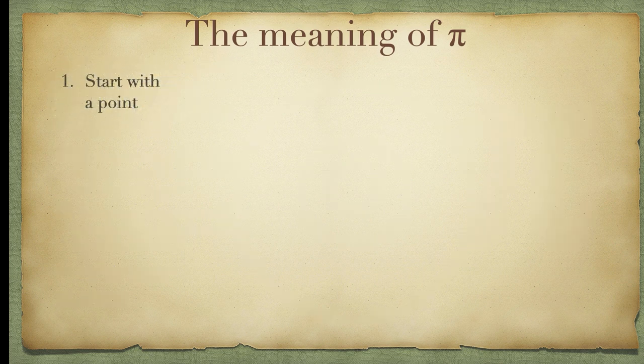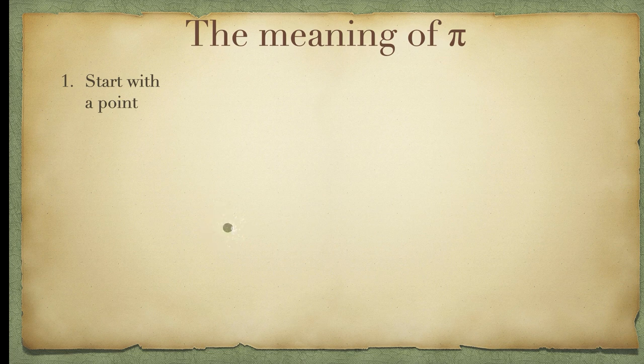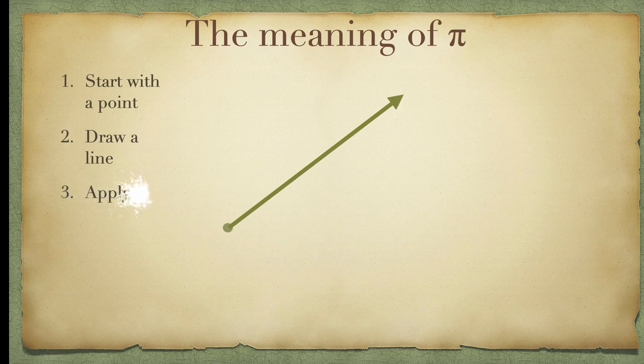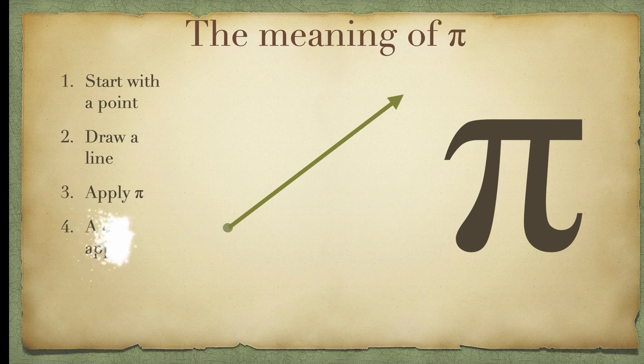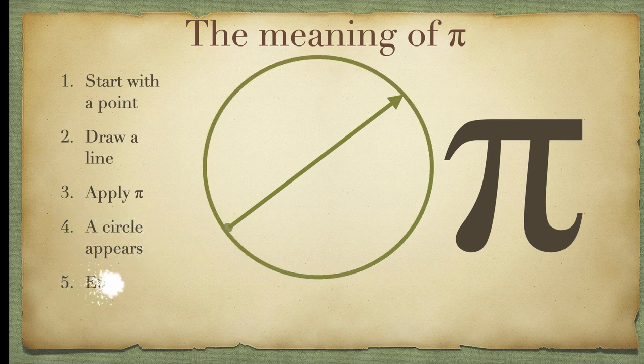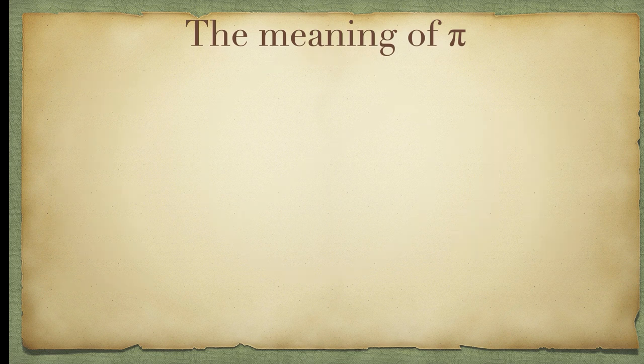So, we start with a point. Start with a point. I have a point I want to make. Could you listen to me? And so, you make the point. You draw a line. All right. And then, from that, apply Pi. And when you apply Pi to that thought, oh, bingo. A circle appears. Wonderful. That's eternity.